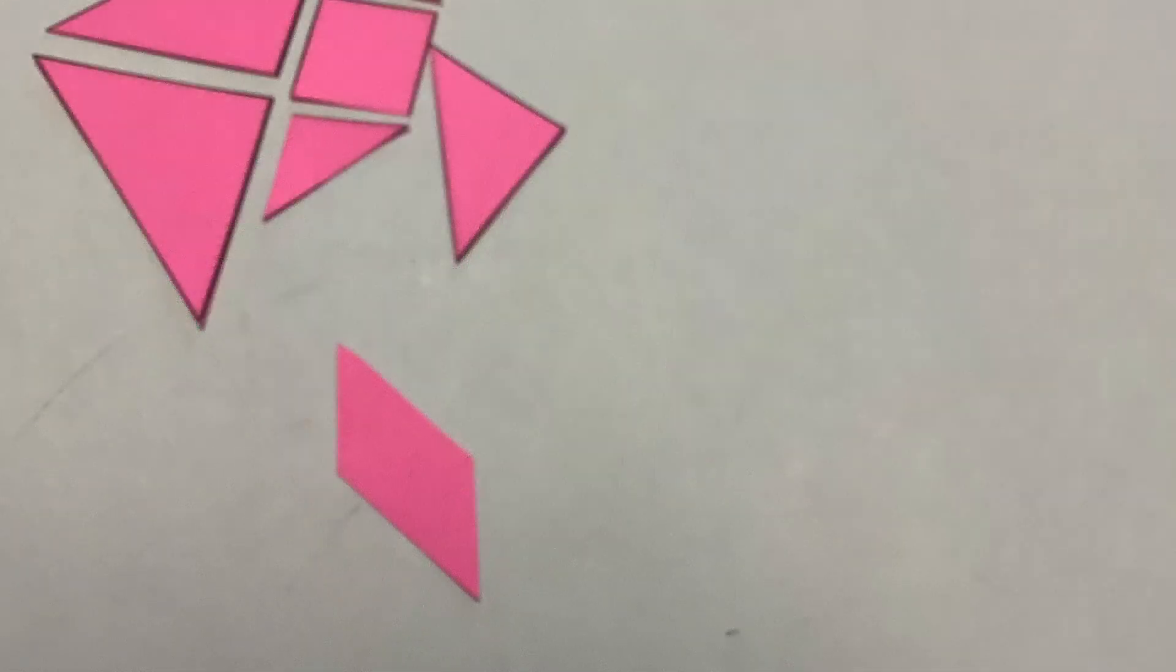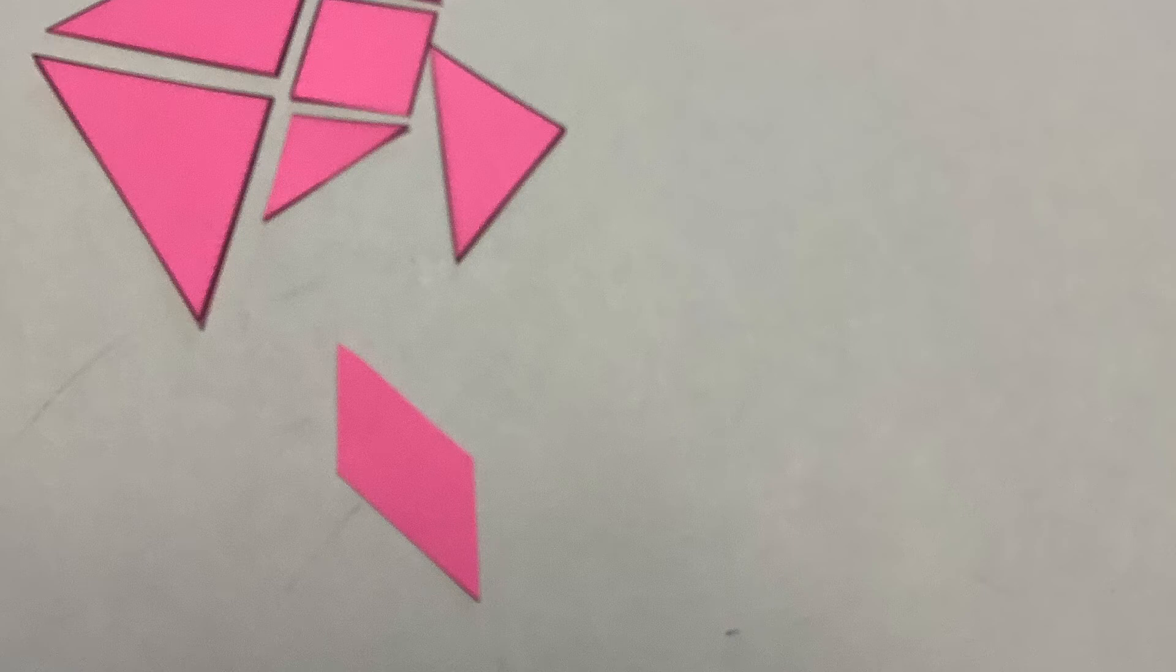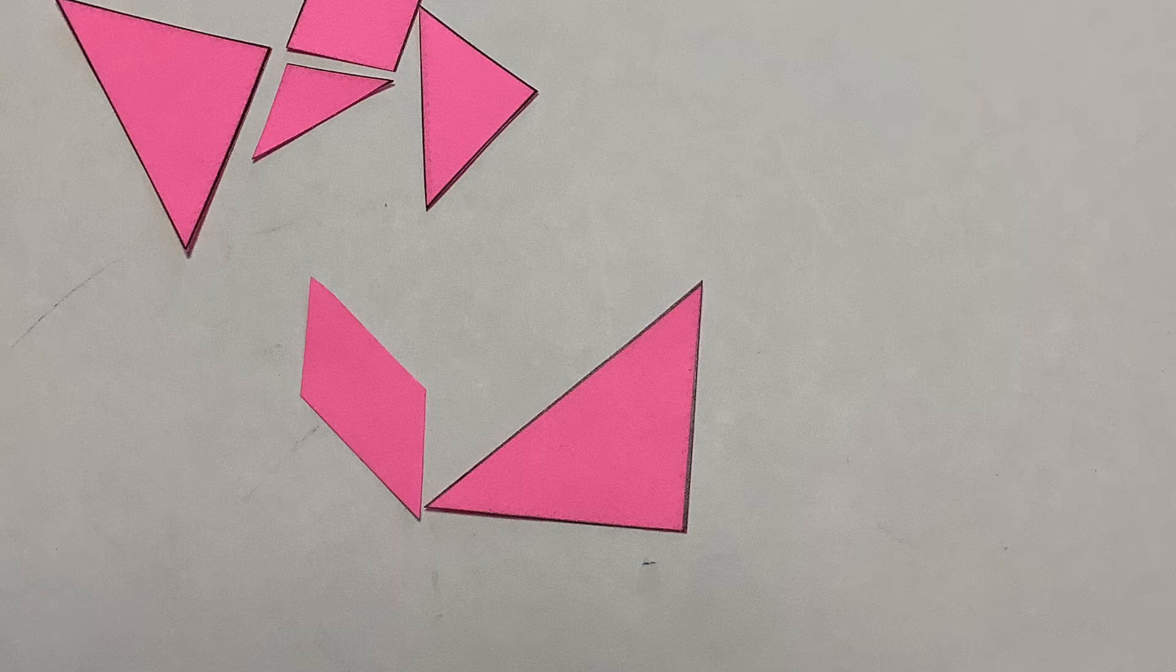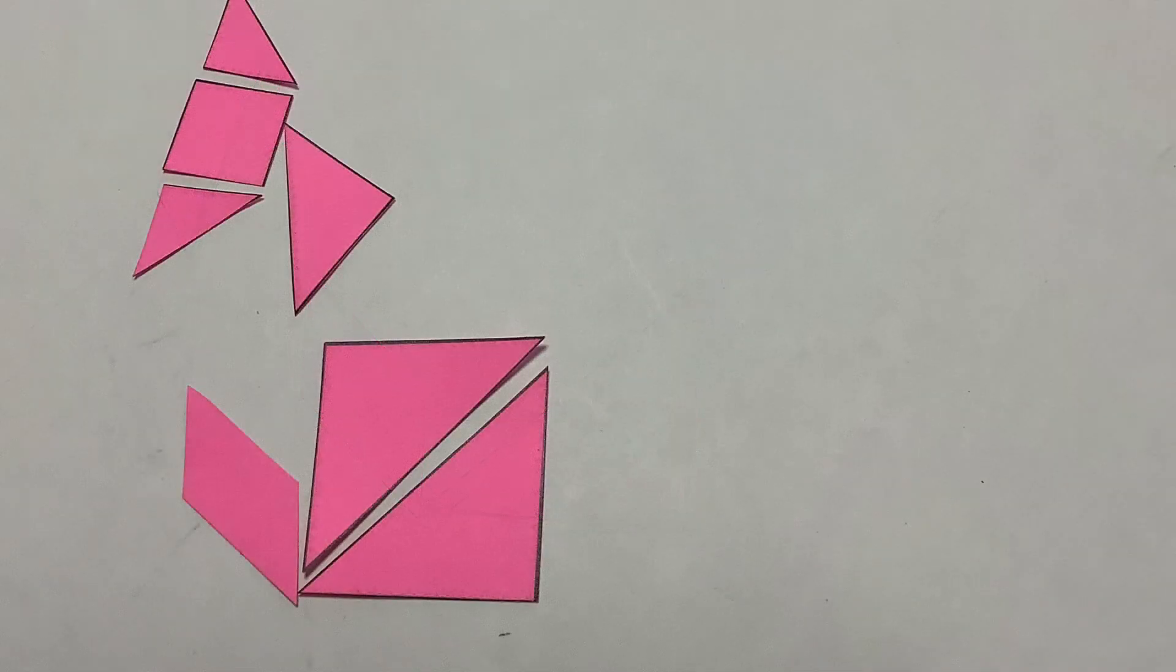I'll show you how to do it. I started with a parallelogram for the tail and then added the big triangle for part of the body, and then the other big triangle is the second part of the body.